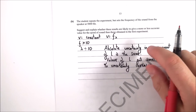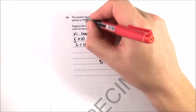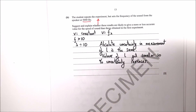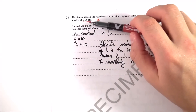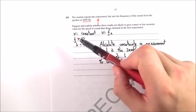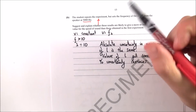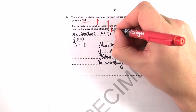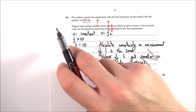Part b is about what happens when the frequency increases to 5000 Hz. The speed of the sound wave stays constant in air, so v is constant. Since v = fλ, if f increases by a factor of 10, then λ must decrease by a factor of 10.